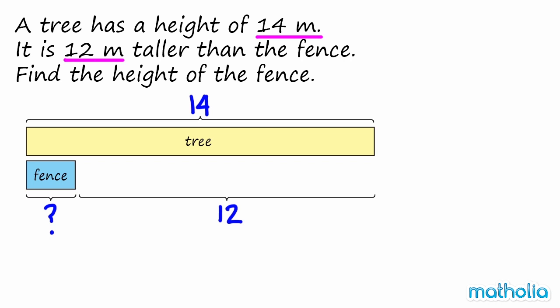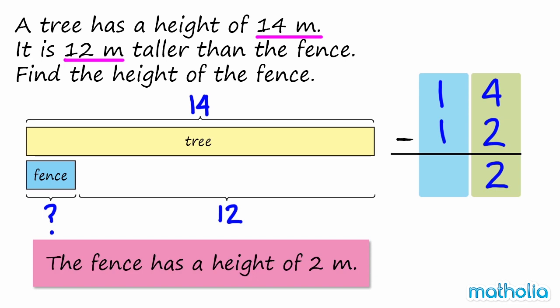To find the height of the fence, we subtract 12 from 14. 14 minus 12 equals 2. So the fence has a height of 2 m.